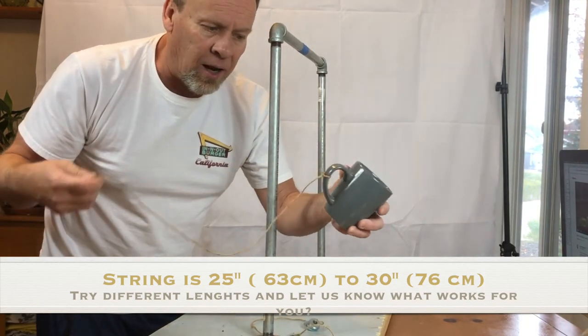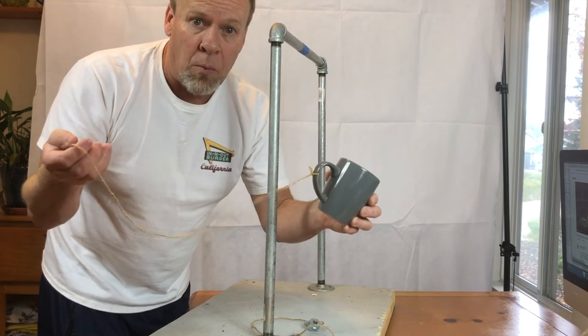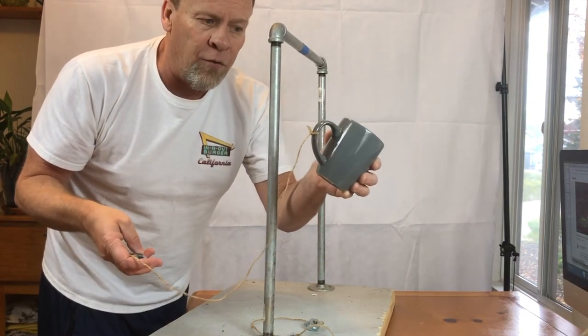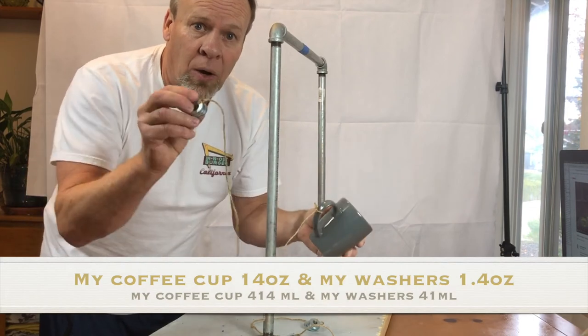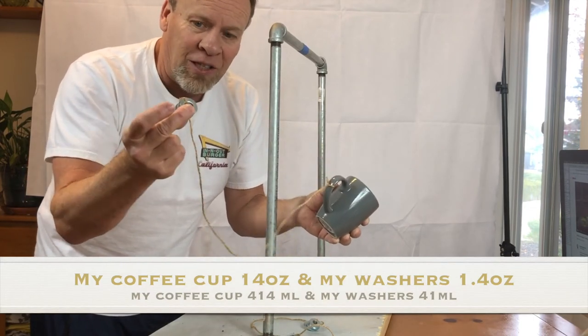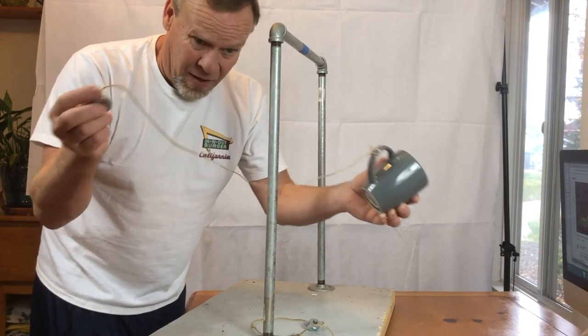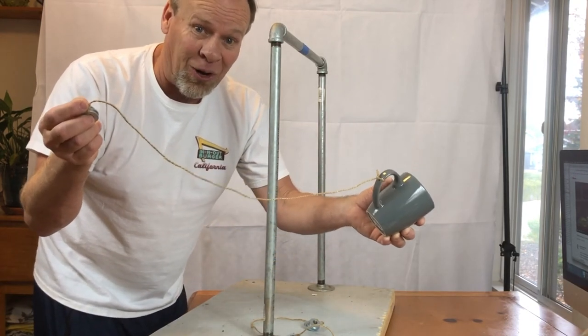Now so you kind of have to have a scale. So it's a 14 to one. So I have a 14 ounce coffee cup. So I have 1.4 ounces on this end of washers. So I have a scale. So I was able to figure that out. And then I got about a 26 inch piece of string.